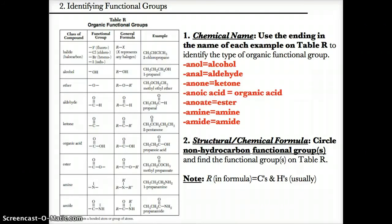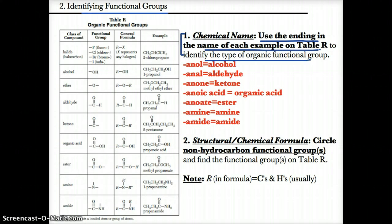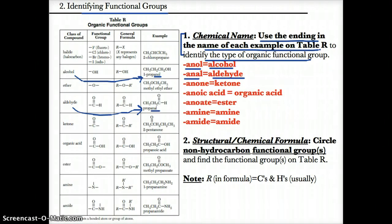Now let's talk about how to identify different functional groups using table R. There are two scenarios. First, if you have a chemical name, you can use the ending in the name to match it up to a specific organic functional group using the examples on table R. For example, the ending '-anol' tells you it's an alcohol (e.g., 1-propanol). The ending '-enal' tells you it's an aldehyde (e.g., propanal).